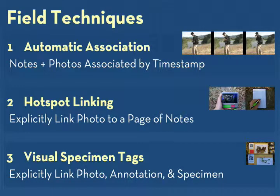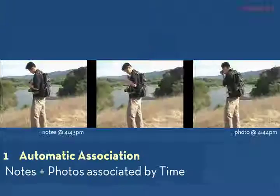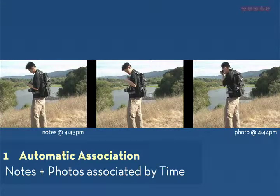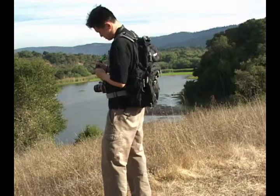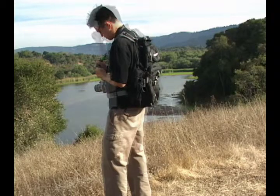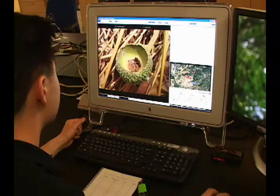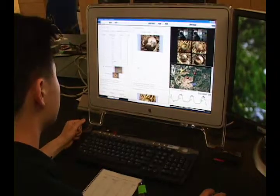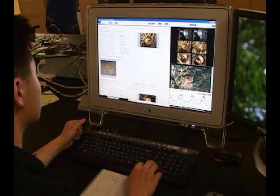ButterflyNet provides three field techniques for correlating these digital media with paper notes. First, ButterflyNet automatically correlates notes with photographs through timestamp information. The biologist takes notes with his digital pen and captures photographs with his digital camera. When he returns to the lab, he can browse through the automatically associated media with the ButterflyNet browser.